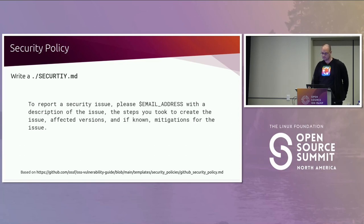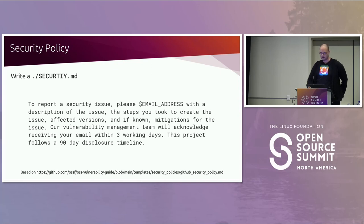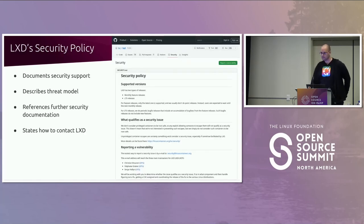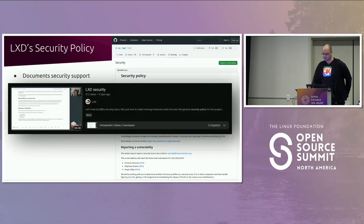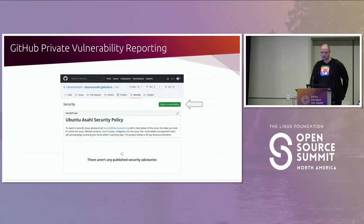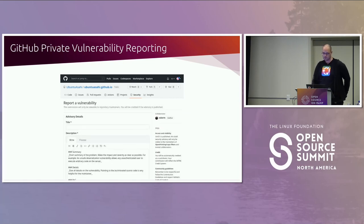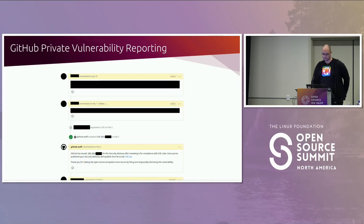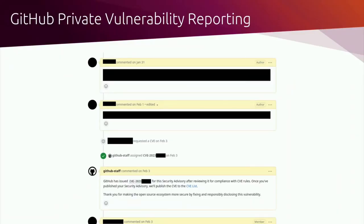LXD's security policy is a model example for writing policies, and they even have a video detailing their security. GitHub recently added a feature for reporting vulnerabilities privately — you go to the security settings of a repo and enable private vulnerability reporting. When a reporter submits a private vulnerability, they fill out an intuitive template. This creates a private issue tracker where you can talk to the reporter, and GitHub staff will also assist and can assign CVEs on request.